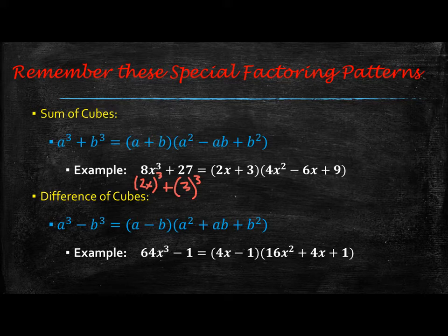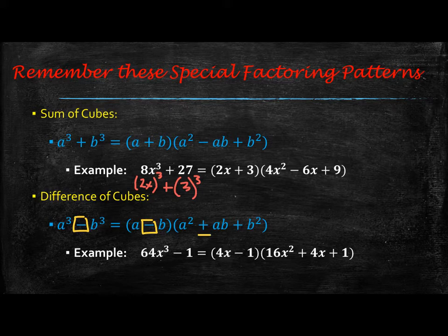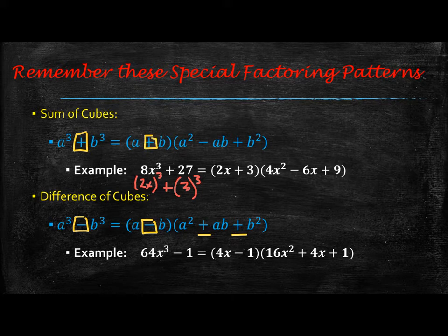Then we have the difference of cubes, which is very similar but has a subtraction sign between the cubes. That factors to be (a - b)(a² + ab + b²). If you start with a difference of cubes, that first parenthesis has a minus, and everything else in the second parenthesis is plus. But if you have a sum of cubes, the first parenthesis has a plus, and the middle term of the second parenthesis is a minus. That's the big difference between these two patterns.